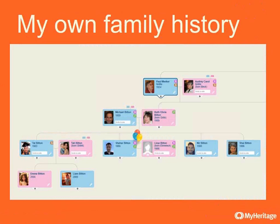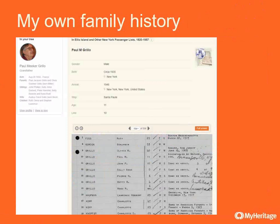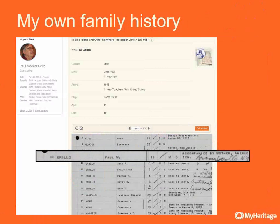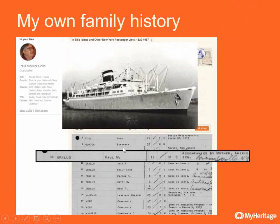Looking at my grandfather's profile, Paul Mickergrillo, you can see there is a small document icon. MyHeritage found this document for me. By clicking it, I got to this collection — a record in the Ellis Island passengers list collection, where in row number 10 you could see the name of my grandfather, Paul Micker, age 11, and the names of his mother and five other siblings. They arrived to New York on the Santa Paula ship from France. In a quick Google search, I even found a photo of that ship.